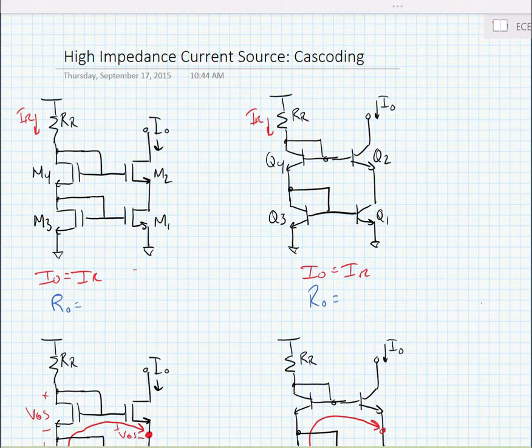Here we have a couple of examples of cascoded current sources shown: the MOS device on the left and the BJT devices on the right. Cascoding is a technique where we stack two transistors on top of one another.